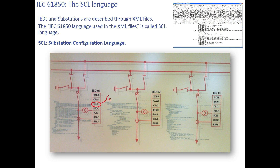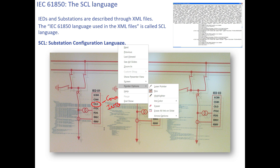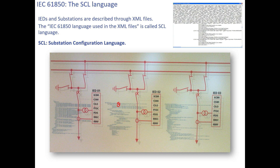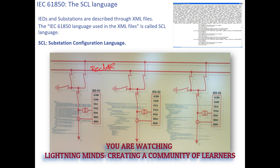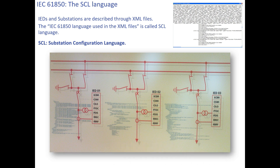CILO is for interlock — C is for control and ILO is for interlock. All logical nodes are already defined in 61850. Any logical node starting with P is related to protection, such as distance protection, time-delayed overcurrent, or instantaneous overcurrent. Any logical node starting with R is for protection-related functions. Protection-related functions may be REC for autoreclose or BRF for breaker failure.